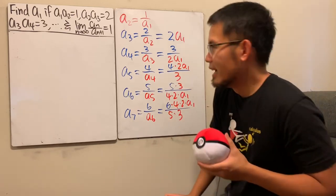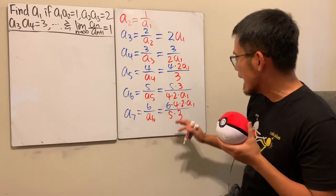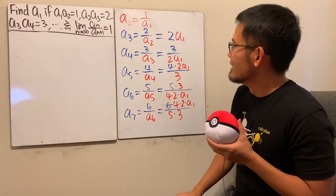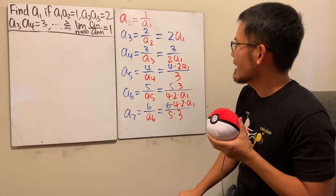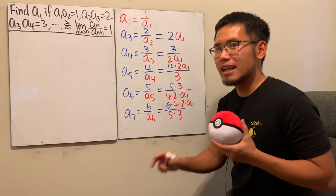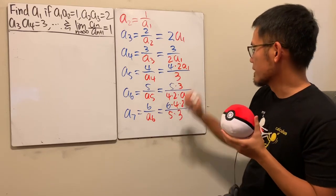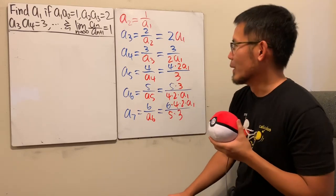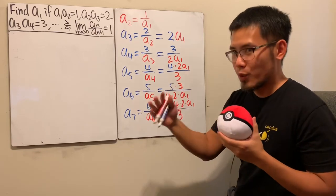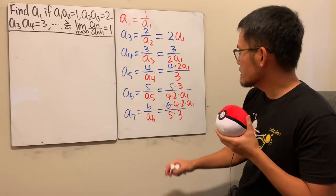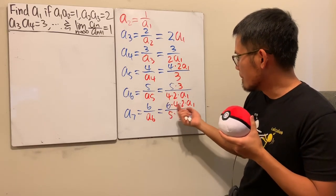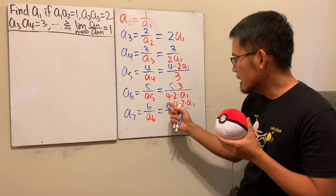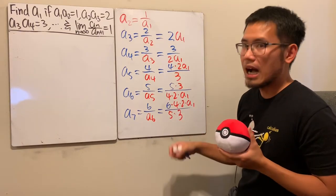We can see that a1 cannot make up its mind — sometimes it's on the bottom, sometimes on the top. So we have to break into cases. We need to figure out the formula for even and odd indices separately. Fortunately, the even numbers stay together and likewise the odds.